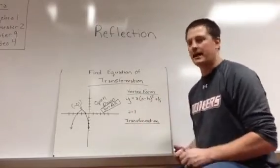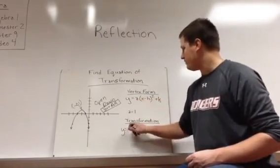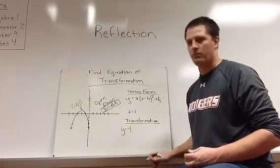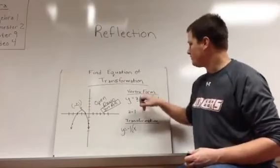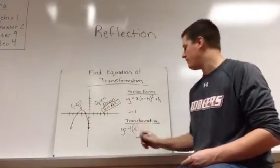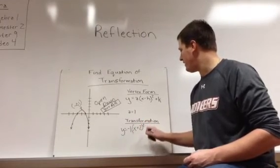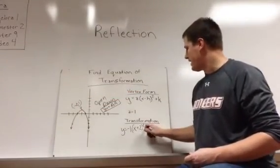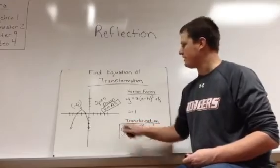So I can actually put everything kind of together now. Now, y equals, this a value is 1, because it's reflected down. We're going to make that a negative 1, x. We're going to subtract our h value, which is negative 2, minus a negative makes plus 2. We're going to square it. And our k value is positive 1. So we're going to add that. We now have the equation of the transformation.